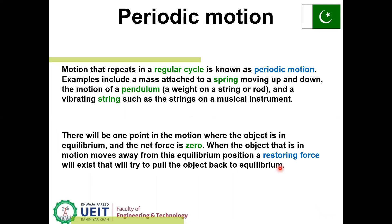Periodic motion: motion that repeats in a regular cycle is known as periodic motion. Examples include a mass attached to a spring moving up and down, the motion of a pendulum — a weight on a string or chord — and a vibrating string such as the strings on a musical instrument.